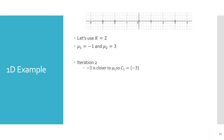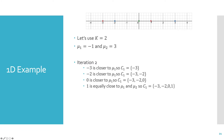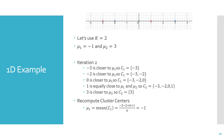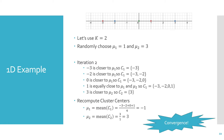In iteration 2, going left to right: negative 3 and negative 2 are closer to mu 1. 0 is also closer to mu 1. The point 1 is equidistant to mu 1 and mu 2, so we randomly choose cluster 1. The point 3 is closer to mu 2, so cluster 2 has the point 3. We recompute the cluster centers and get the exact same values as before. Because we got the exact same cluster centers two iterations in a row, we have converged — we're done.